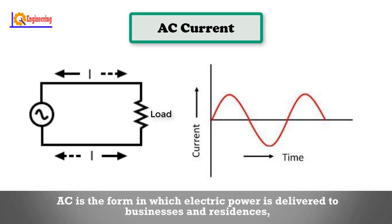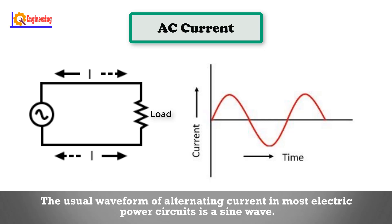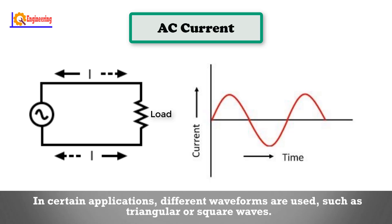AC is the form in which electric power is delivered to businesses and residences, and it is the form of electric power that consumers typically use when they plug kitchen appliances, televisions, and electric lamps into a wall socket. The usual waveform of alternating current in most electric power circuits is a sine wave, though in certain applications different waveforms are used such as triangular or square waves.